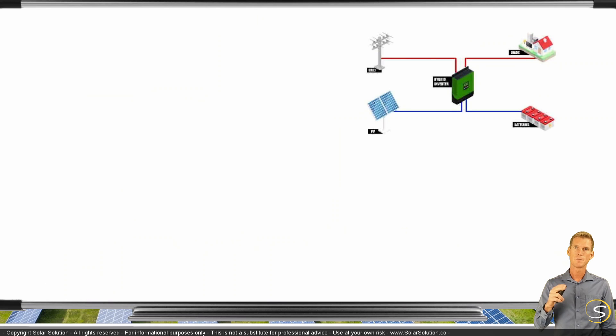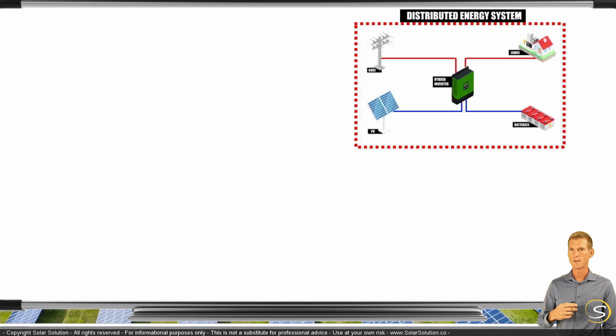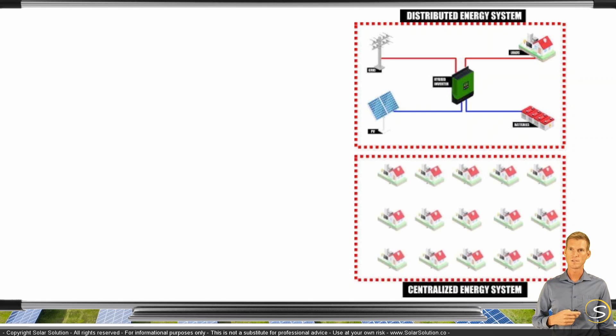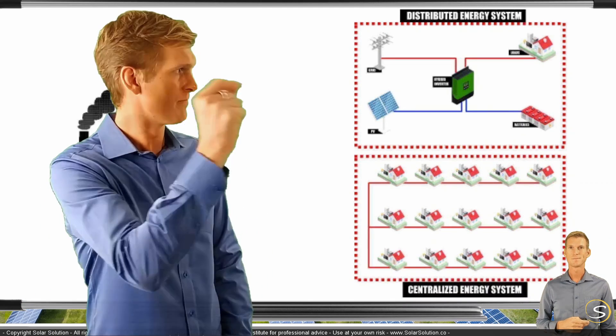So this system is a distributed energy system, actually a DESS, because you've got storage in there as well. Now, let's assume that all of your neighbors, all of the people around you are using the conventional model of power consumption. So they are all connected to one single grid, to the centralized energy system. And both this group of people, so all the other people and yourself, you are connected to the power plant.